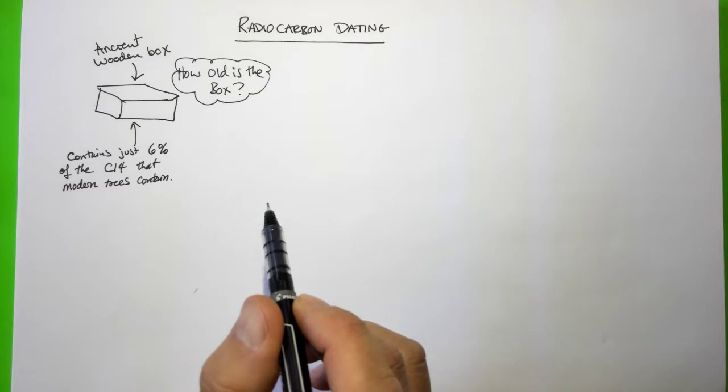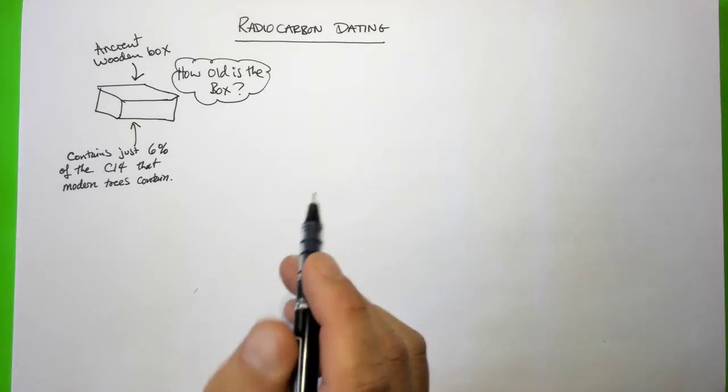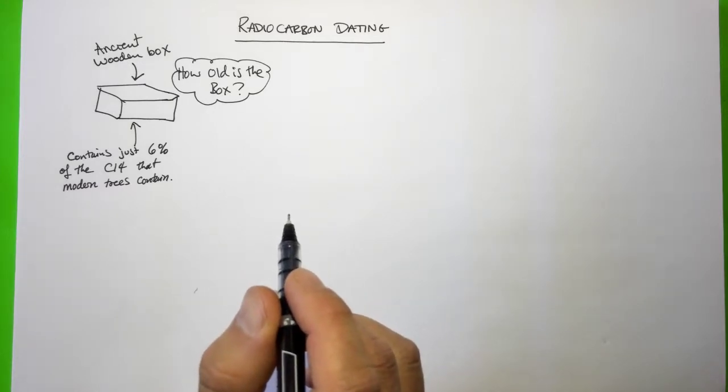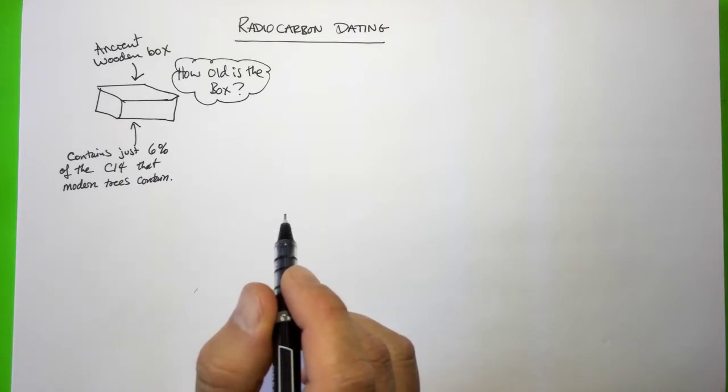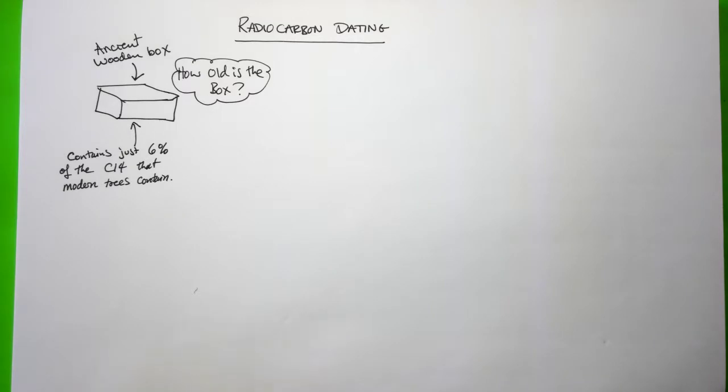If you don't remember, carbon-14 is produced in the upper atmosphere by nitrogen molecules which are hit by cosmic ray particles, which turn them into a new element, the element carbon-14, which is an unstable isotope.